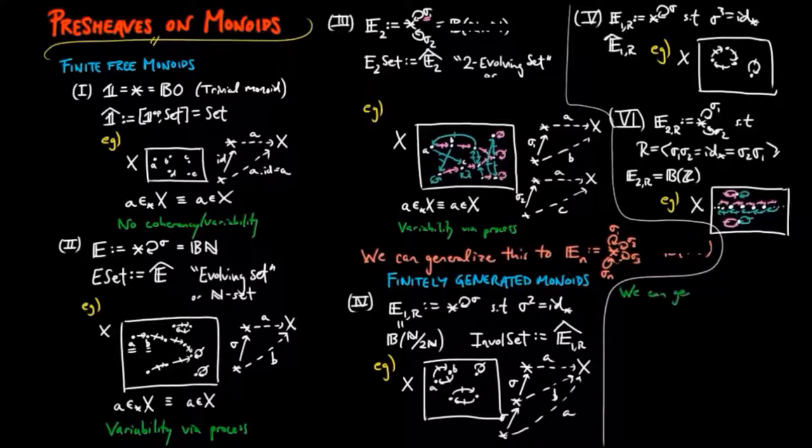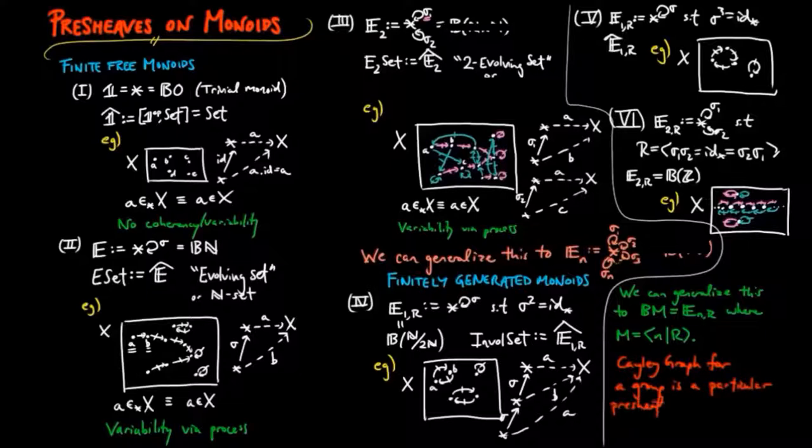We can generalize this to any presentation of a monoid M given on N generators and a set R of relations. In particular, Cayley graphs for a monoid or a group can be modeled in a category of pre-sheaves on the category E and R.